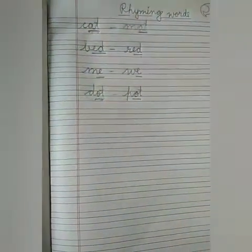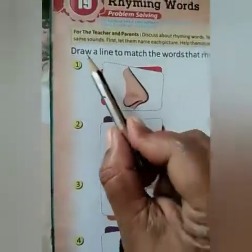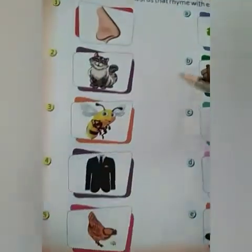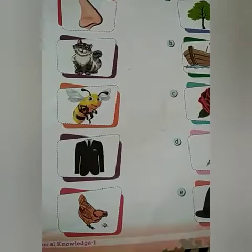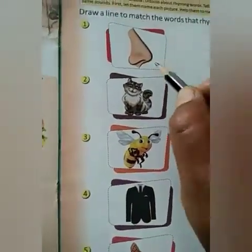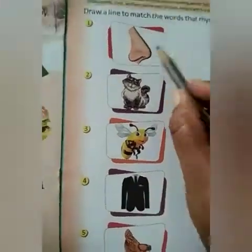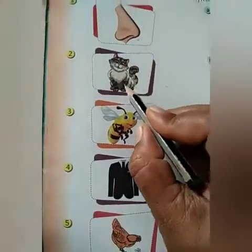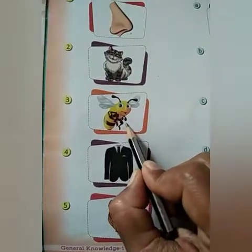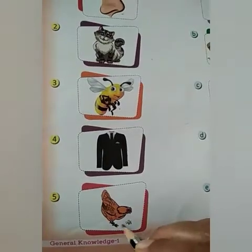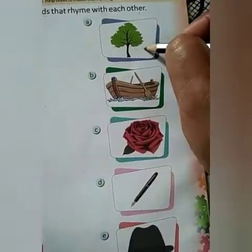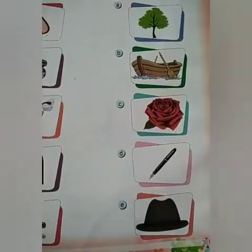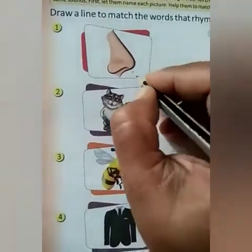I hope you all have understood. Now we will do the book exercise. Let us read: Draw a line to match the words that rhyme with each other. Here children, you can see pictures of different things. We will see each picture — first is nose, next is cat, next is bee, then coat, then hen, pen, then tree, boat, rose, and hat. So we will write the names so that you can easily understand.